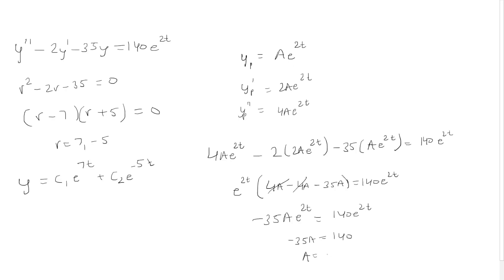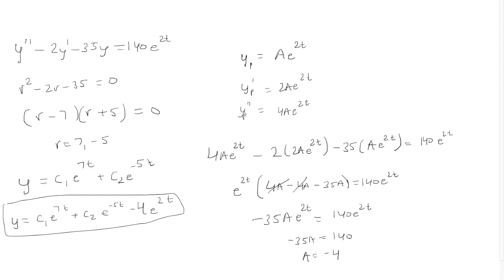So negative 35a equals 140, and dividing both sides by negative 35 gives a equals negative 4. Bringing it all together, the general solution is the homogeneous solution plus the particular solution, which is negative 4 e to the 2t. And that is our answer.